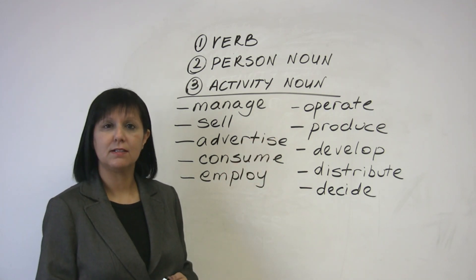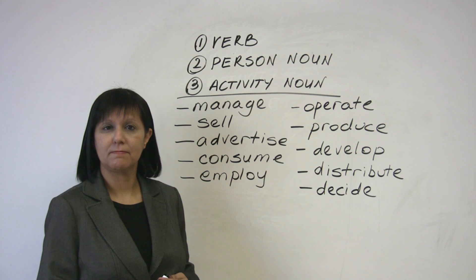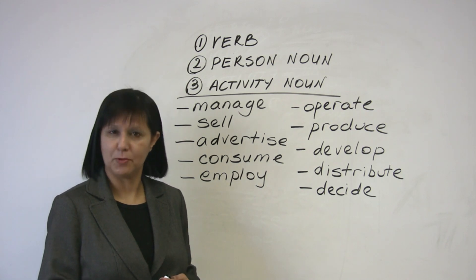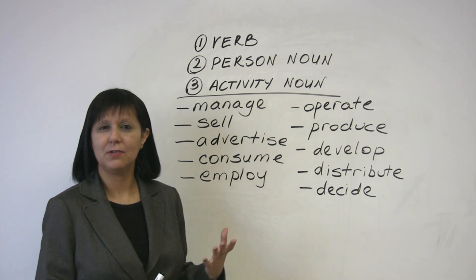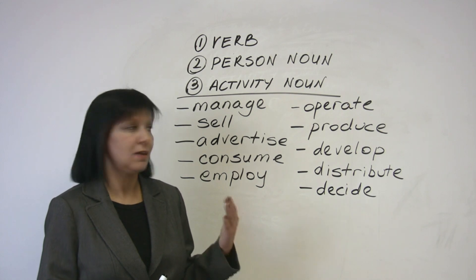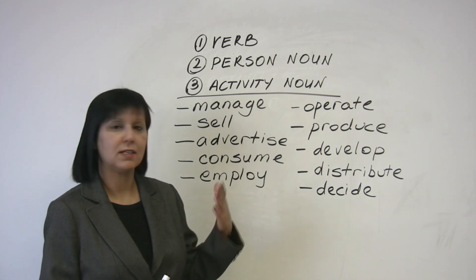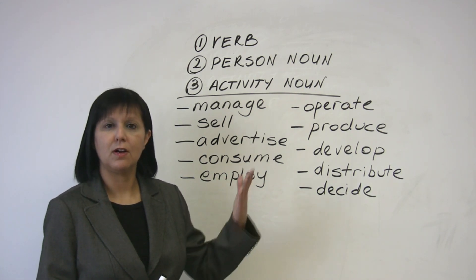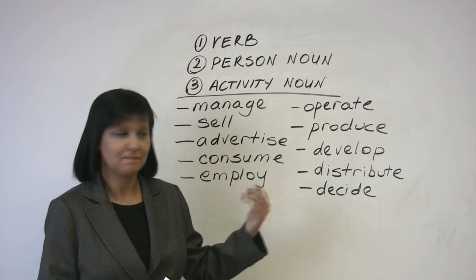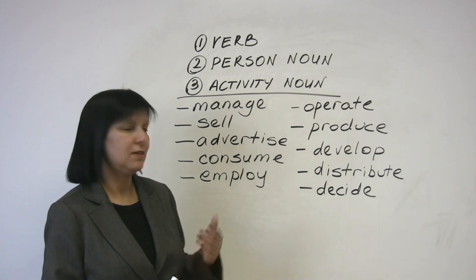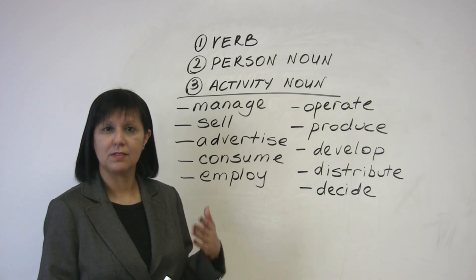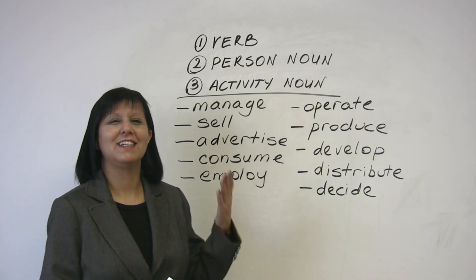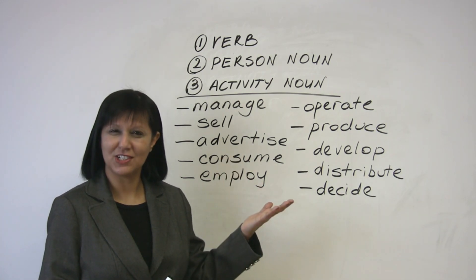Operate. The person noun is operator. The activity noun is operation. Operate. Operator. Operation. Produce. Producer. Production. Very good — you can do these along with me.